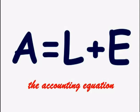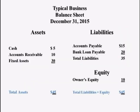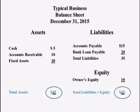This presentation is on the accounting equation: assets equal liabilities plus equity. Balance sheets have an assets section and a liabilities and equity section, such as this balance sheet. The assets here, which include cash and fixed assets, total $45. The $35 of liabilities, which include a bank loan payable, plus the $10 of equity, also equal $45.